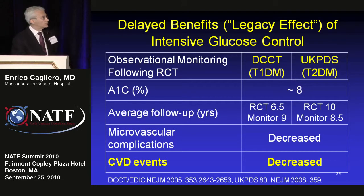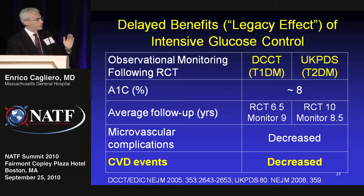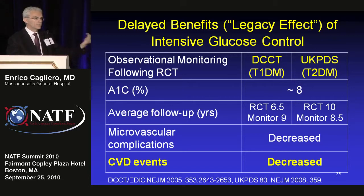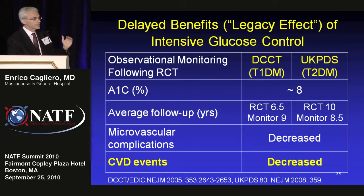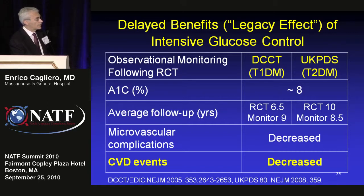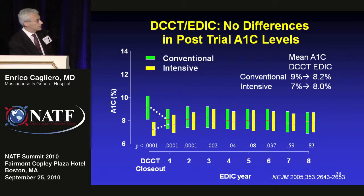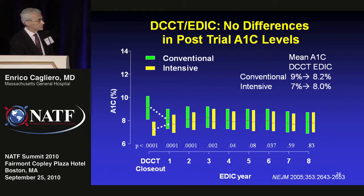However, investigators followed both cohorts after the end of the randomized trials. The problem is that when patients were returned to primary care or their endocrinologist, hemoglobin A1c got worse in the intensively controlled group but slightly better in the poorly controlled group, so there was no longer a difference. After another 9 to 10 years of observation, there was now also a decrease in cardiovascular events — a puzzling finding, since A1c was the same for both groups during that follow-up period.